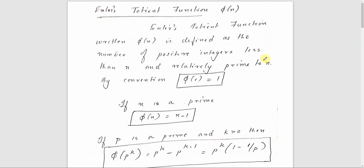Today we will be discussing Euler's Totient function, denoted by phi of n. It is defined as the number of positive integers less than n and relatively prime to n. So, phi of n counts all numbers from 1 to n-1 that are relatively prime to n.